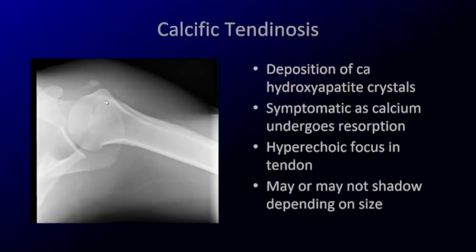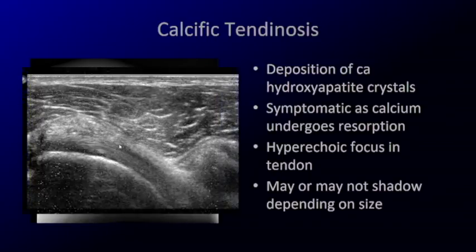Here's a patient who had really bad shoulder pain all over — he called me on a Sunday and begged me to come in. This is what it looks like on a radiograph and on ultrasound: you see a hyperechoic structure that may or may not shadow. In this case it is not shadowing, and you can see it's sitting on the surface of the subscapularis tendon.